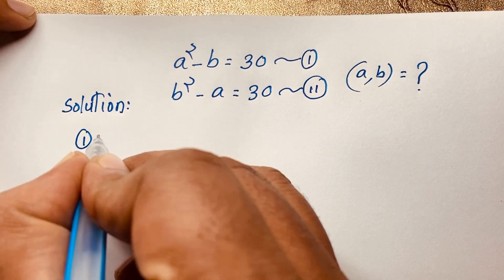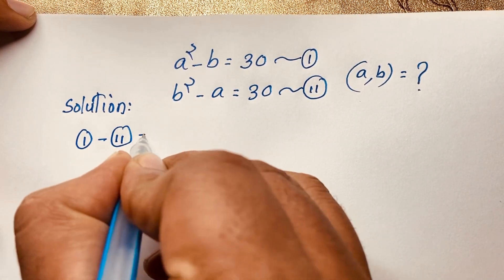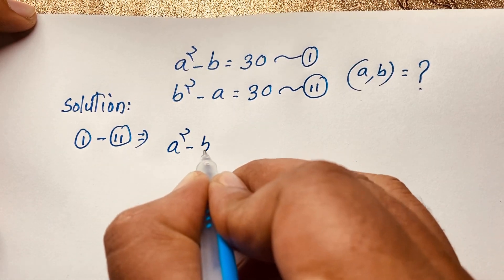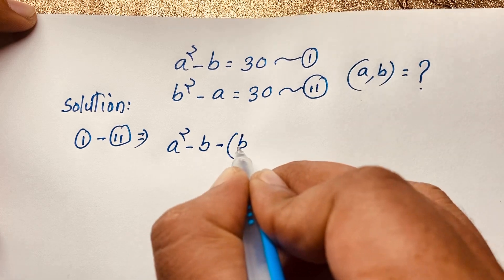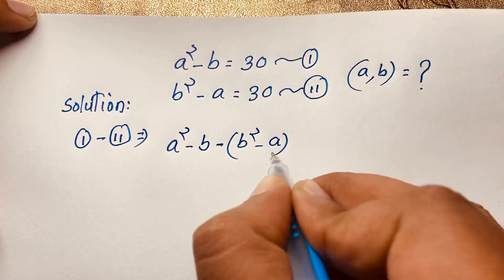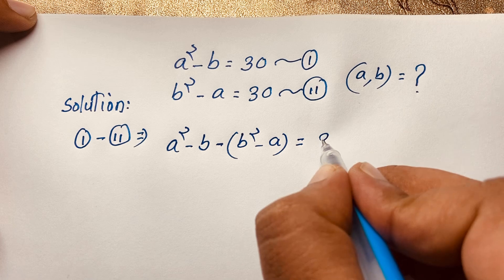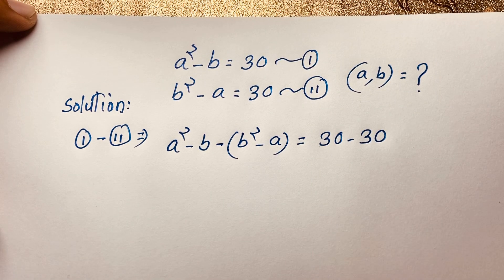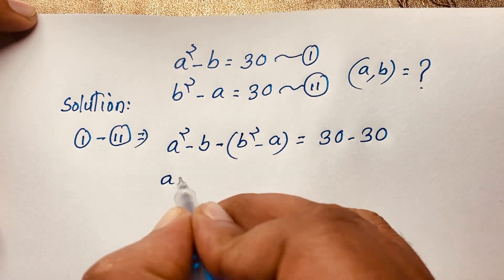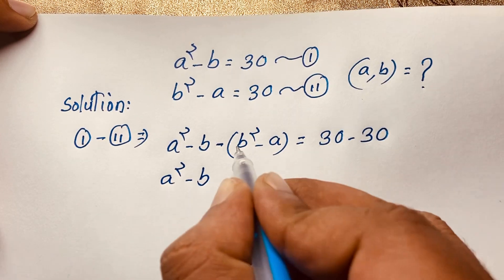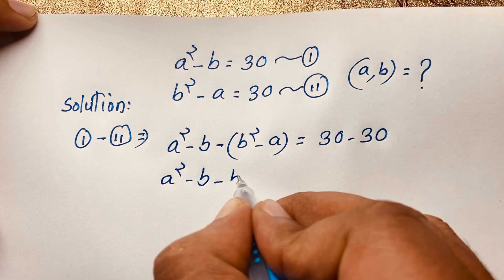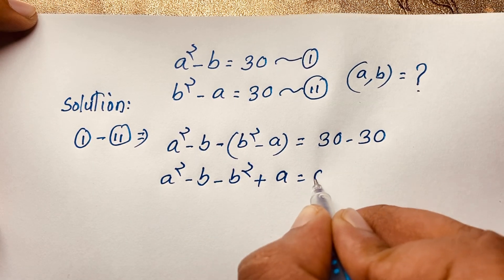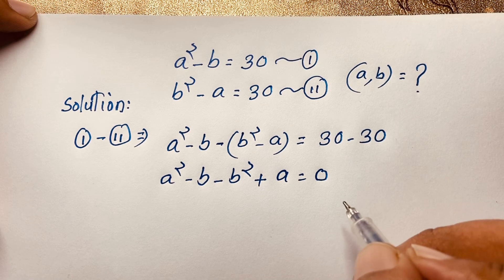I take here first equation minus second equation. So it will be A squared minus B, minus B squared minus A, is equal to 30 minus 30. I subtract both equations, so the result is A squared minus B minus B squared plus A is equal to 0.